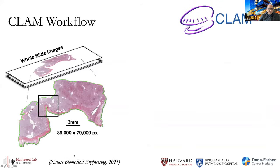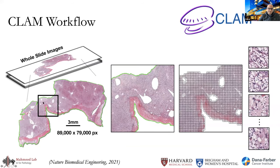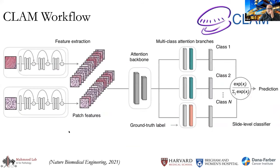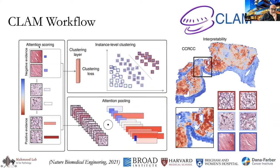The CLAM workflow: segment the tissue, patch everything, extract ResNet features — specifically a truncated ResNet-34 using the first three layers — then apply an attention backbone with multiple attention branches. Each patch is scored by attention, pooled, and then instance-level clustering groups similar morphologic features together. Because attention is built in, the model is interpretable at the patch level — we can rank patches by importance and project them back to the slide to get attention heatmaps that correlate with what a pathologist would typically examine.